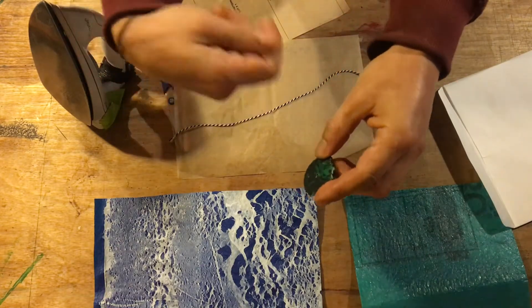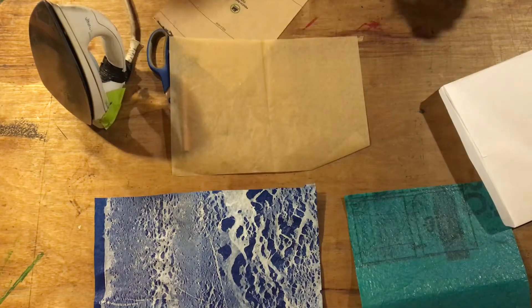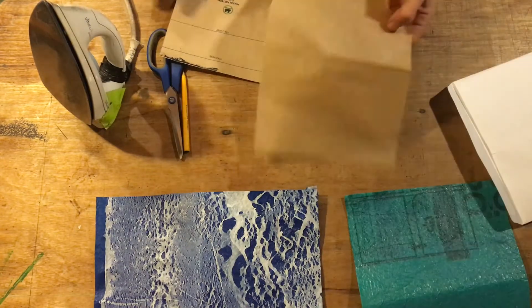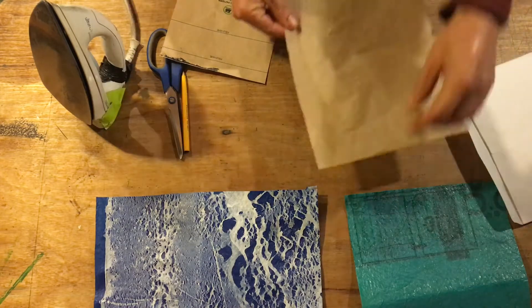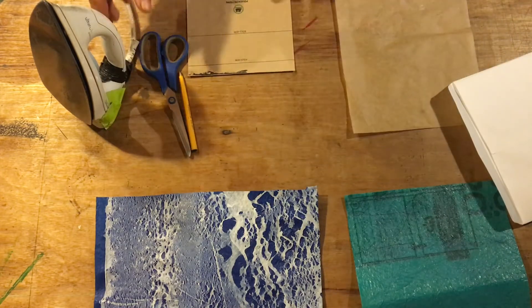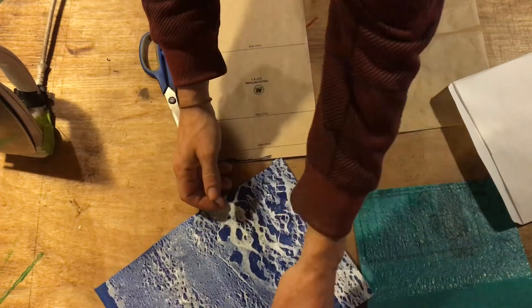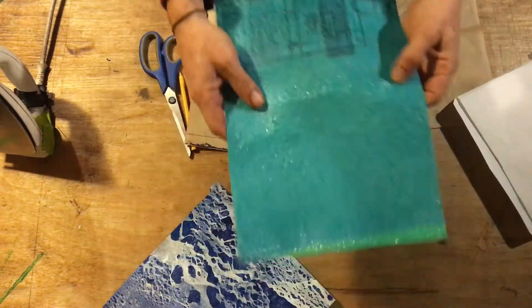For the pouch, all we need is our baking paper. You can just pick the material that you want. I want to make my pouch maybe green.